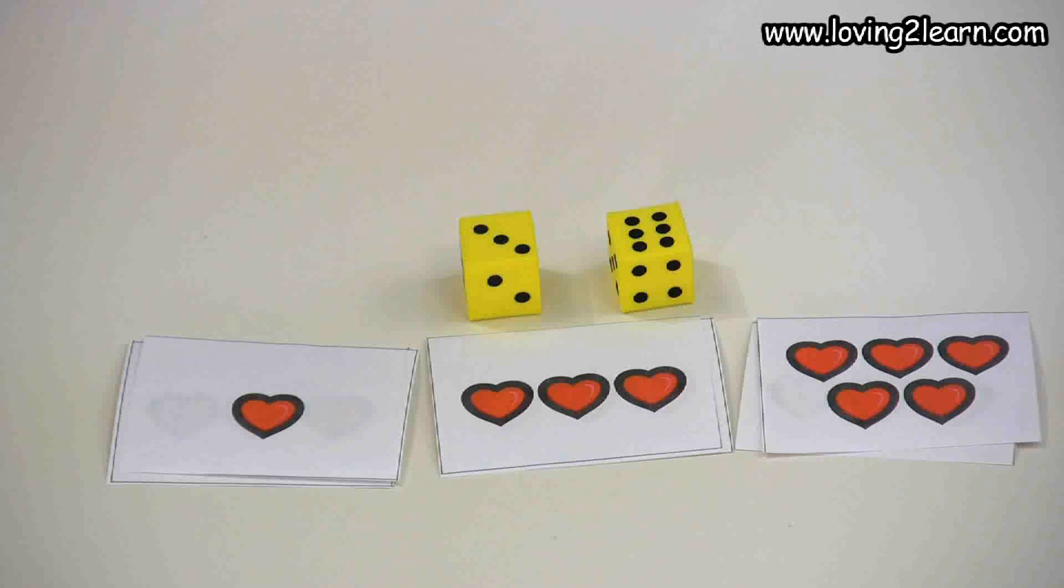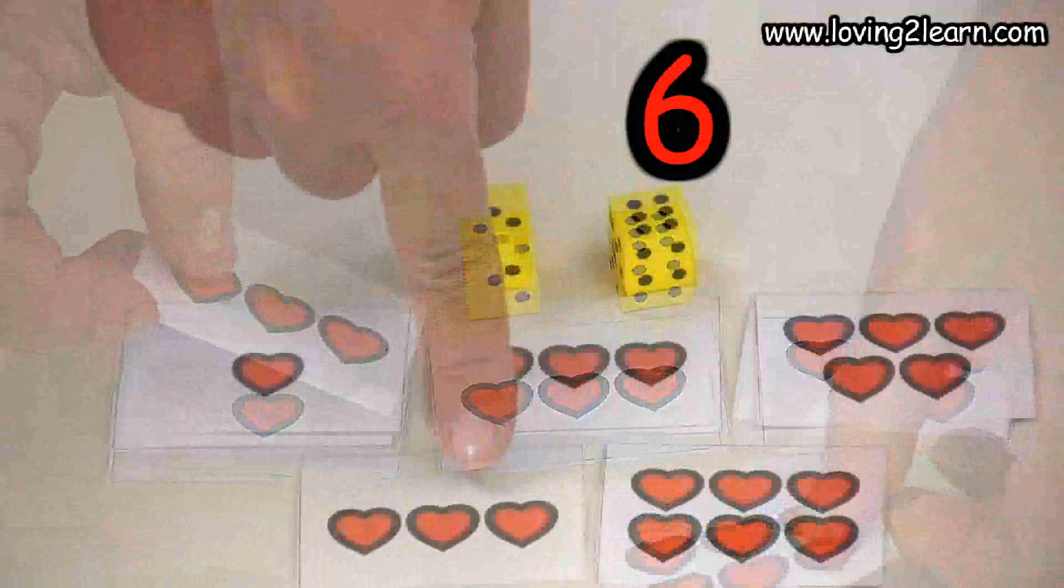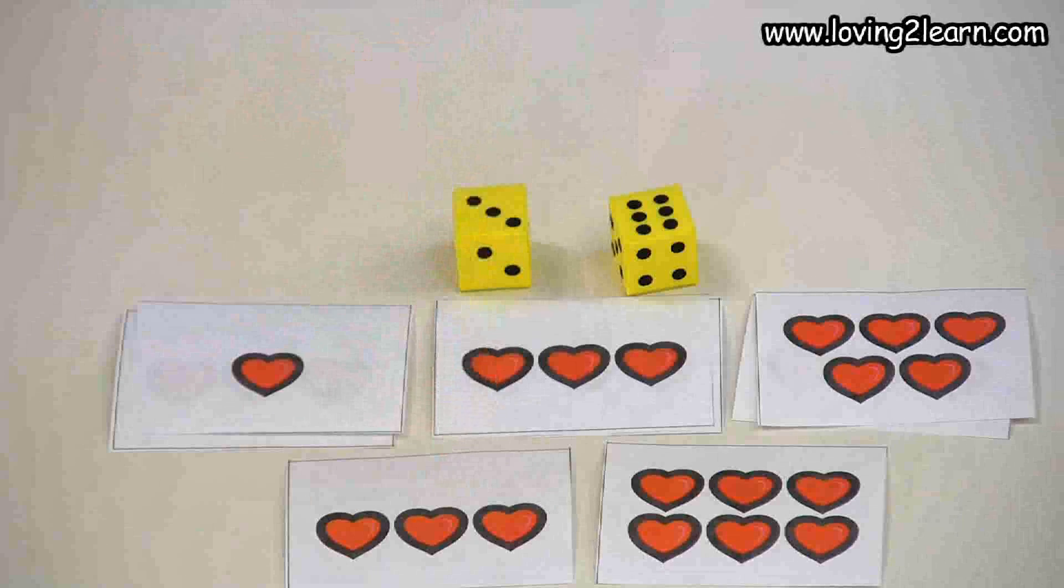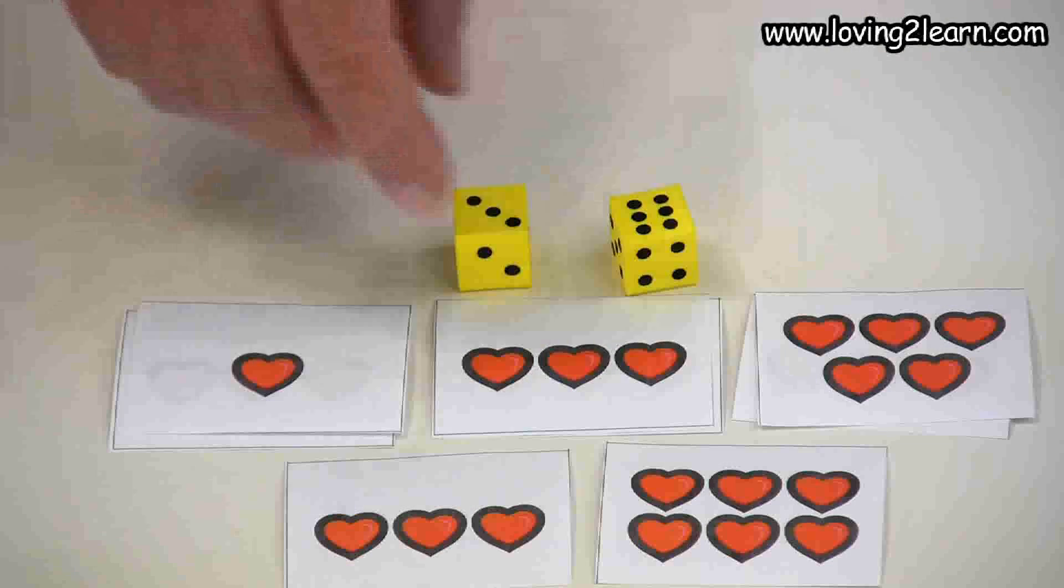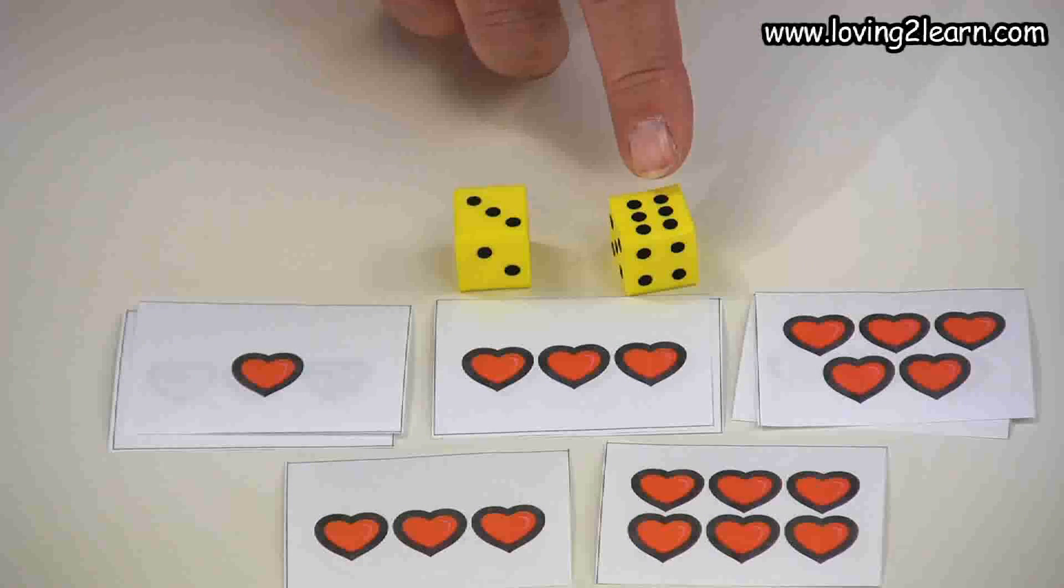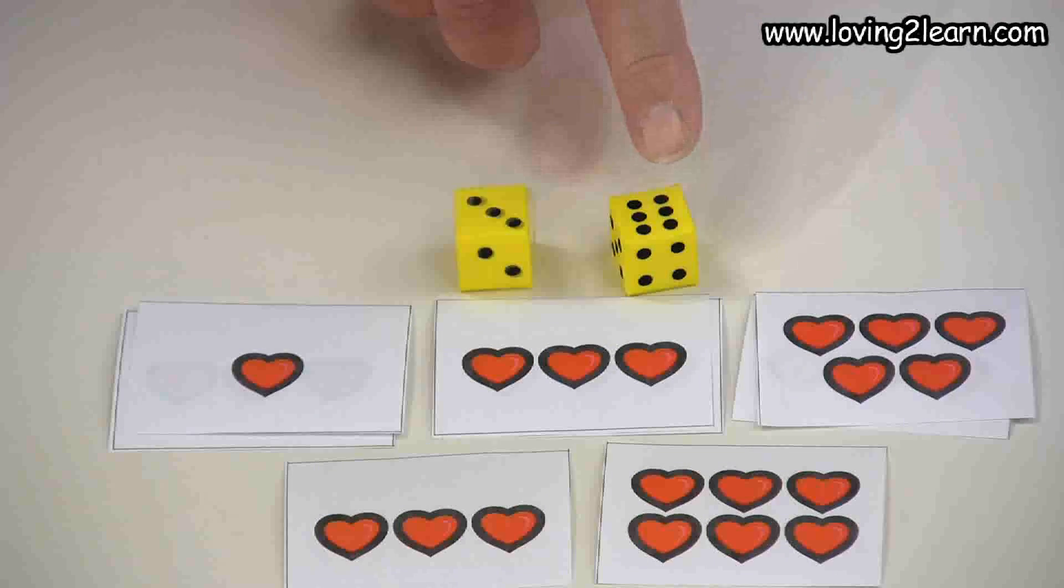I get to play one more combination. This time I'll play six and three, which equals nine. So six, seven, eight, nine. Those are the combinations I choose to play to make nine.